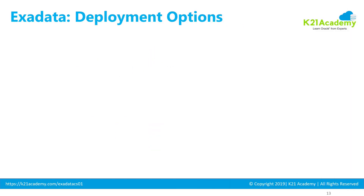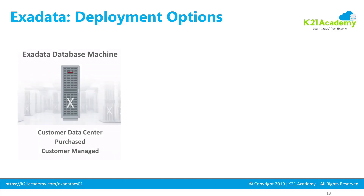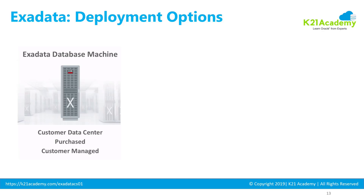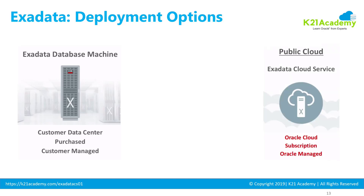Now let's look at the deployment options for Exadata. There are three ways to deploy Exadata. The first is traditional on-premise deployment, where you purchase the Exadata machine and deploy it on customer premises — this is what customers have been doing before cloud.